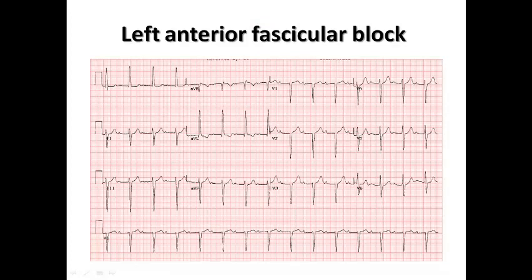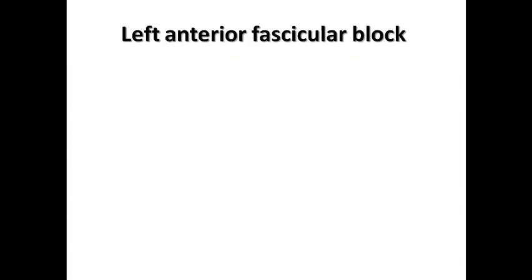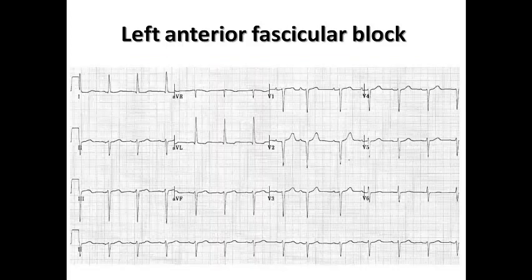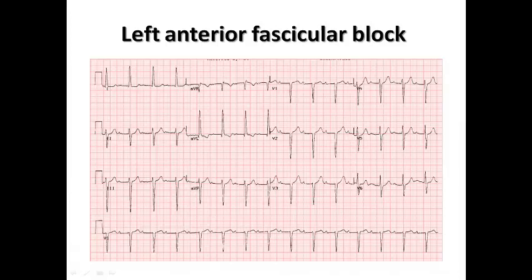Here is an ECG example. The complexes are predominantly positive in leads I and AVL and predominantly negative in the inferior leads — this could represent LVH or left anterior fascicle block. In another example, we see the same left axis deviation with mild increase in complex duration, association with first degree AV block, and increased voltage in the limb leads. The R wave in AVL may exceed 15 to 20 mm with deep S waves in III and AVF, but chest lead voltage is not as elevated. Do not misdiagnose this as LVH.